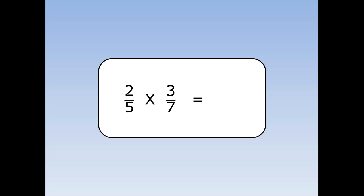2 fifths times 3 sevenths. We times the top by the top: 2 times 3 is 6. Bottom by bottom: 5 times 7 is 35. The answer is 6 over 35.